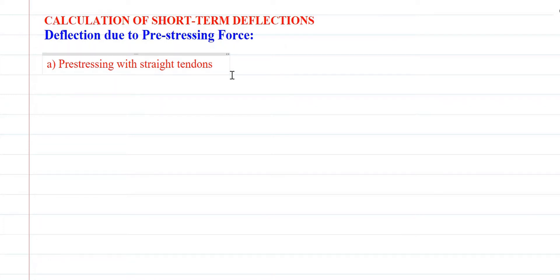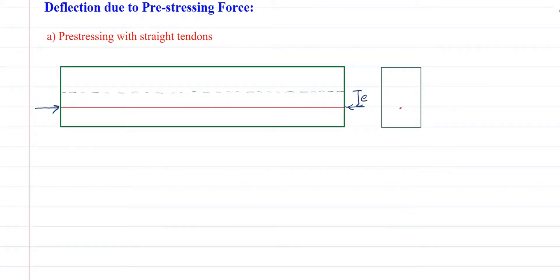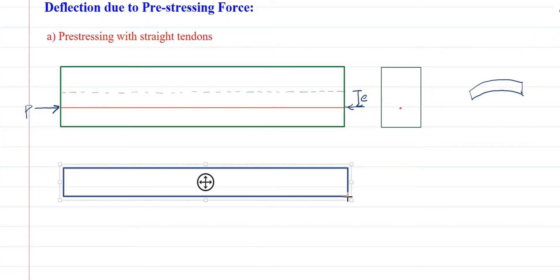In this case, you have a beam with eccentricity e throughout the length of the section. If I draw the bending moment diagram due to this eccentricity, suppose the force acting is P, it is going to deflect due to the pre-stressing force. There is a constant bending moment P·e acting throughout, and this is a hogging moment, so I will denote the bending moment diagram by a negative sign.